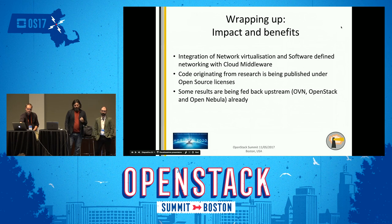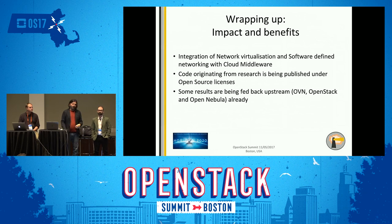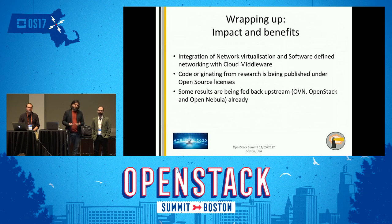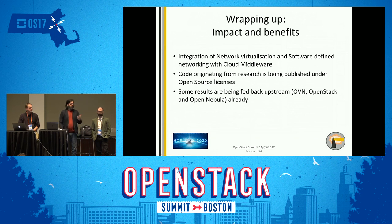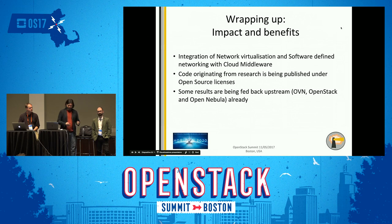Wrapping up, the impact and benefits of this project include the integration of network virtualization and software-defined networking mechanisms with cloud middleware. It is important to stress, especially in this venue, that code originating from research is being published under open source licenses, and some results are already being fed back upstream — specifically to OVN, OpenStack (especially the Neutron subsystem), and OpenNebula.